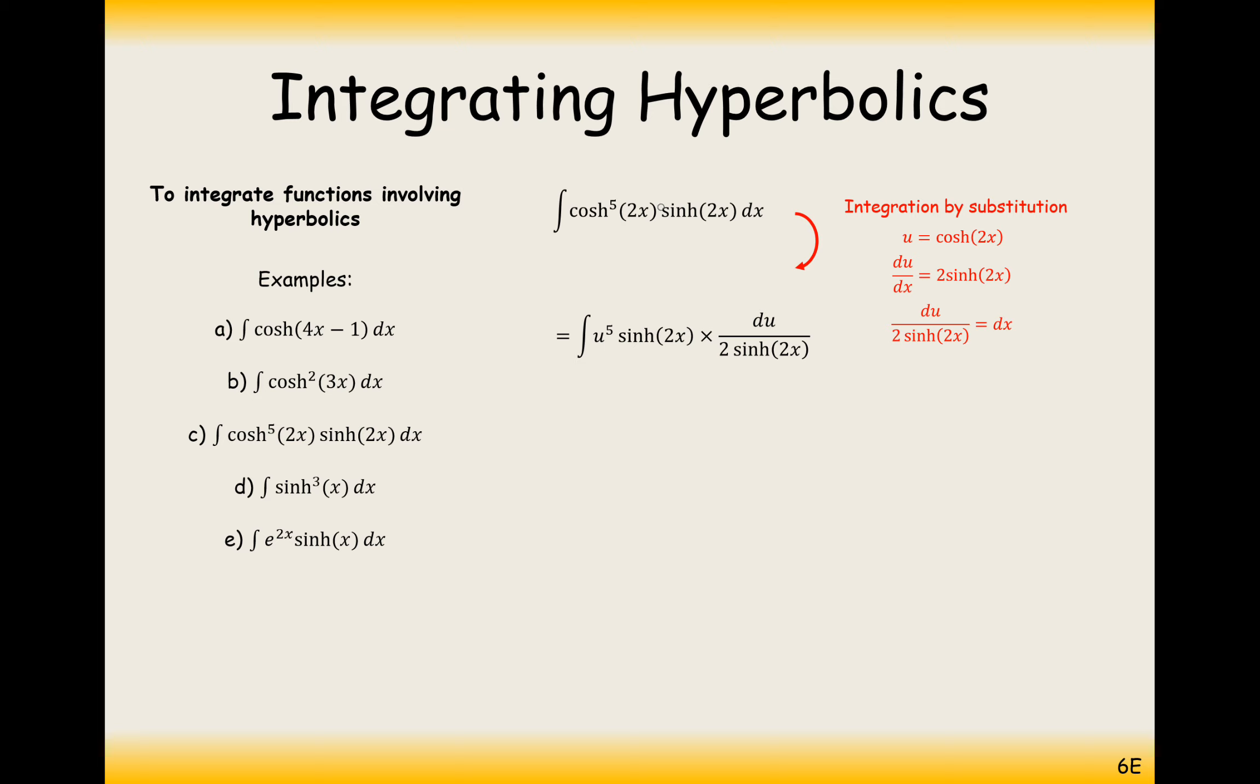I'll substitute in u because u is cosh 2x and it will be u to the power of 5. Sinh 2x will have to stay there, but I can replace my dx with du over 2 sinh 2x. We can cancel out the 2 sinh 2x on the top and bottom. Factorize the half to the front, and now we've got something we can integrate: u to the 5 du.